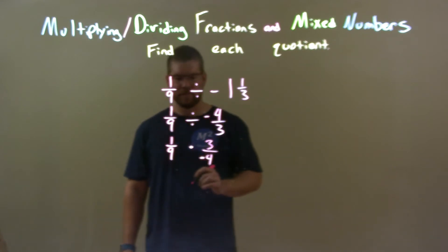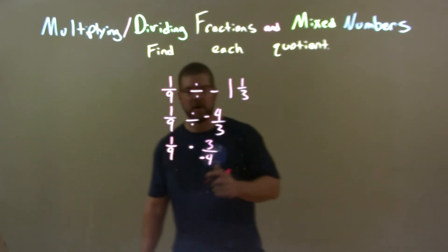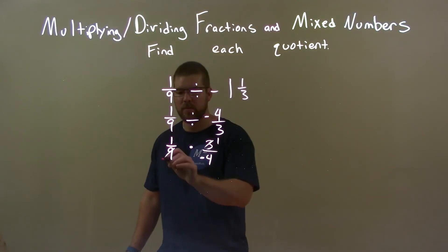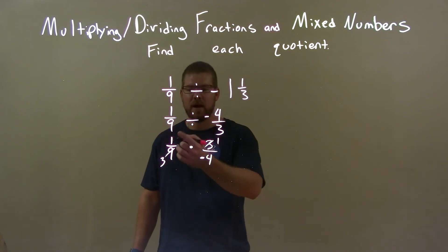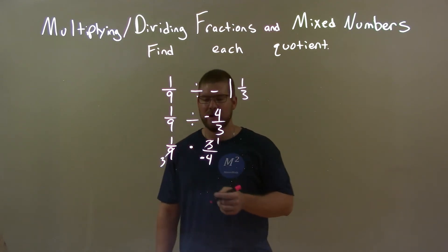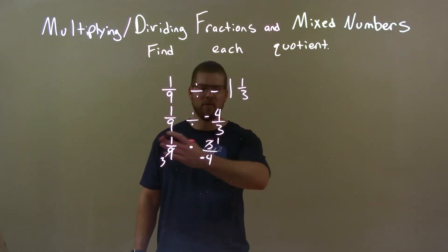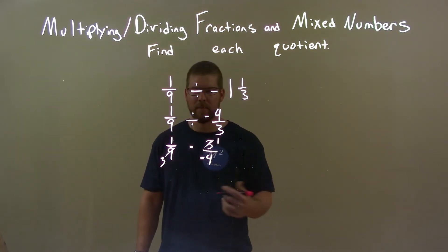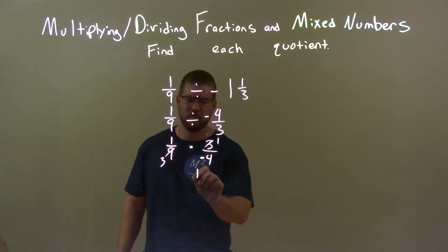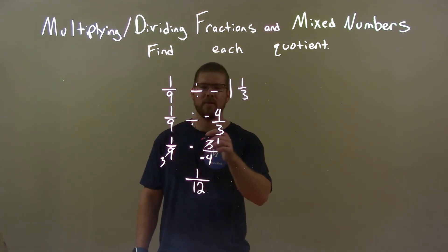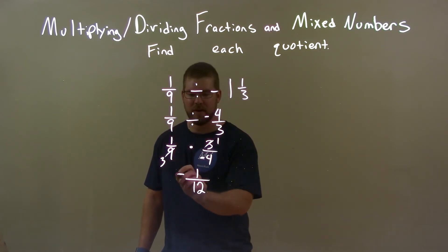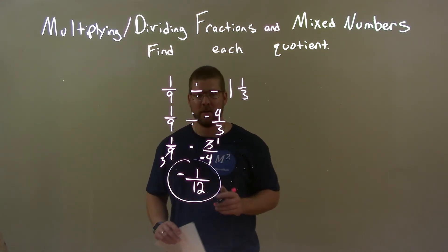Now, can we simplify this at all? Of course we can. 9 and 3 are both divided by 3 which is 1 up here and 3 left over. Now, we have 1 third times 1 over negative 4. Multiply across the numerator. Multiply across the denominator. 1 times 1 is 1. 3 times 4 is 12. And a positive times a negative is a negative. So, we have a negative here. Overall, negative 1 twelfth is our final answer.